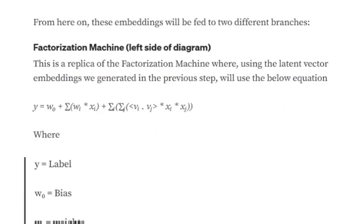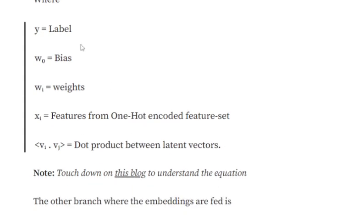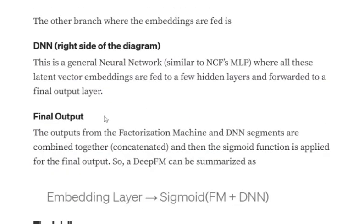On the left side we follow the factorization machine equation: y equals w0 plus the summation of wi times xi, plus the summation of the dot product of vi and vj times xi times xj, where vi represents the latent factor. Here, y is the label, w0 is the bias, wi are the weights, xi are the features for the one-hot encoded feature set, and the dot product between latent vectors vi and vj is essentially the embedding we're generating.